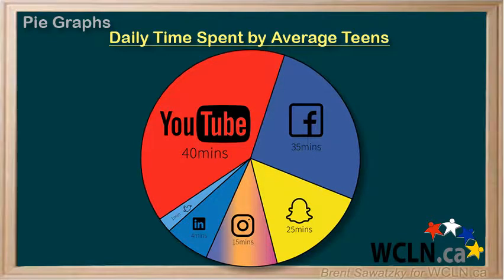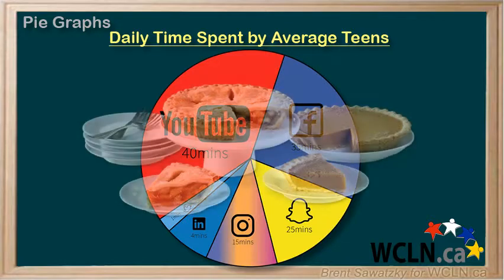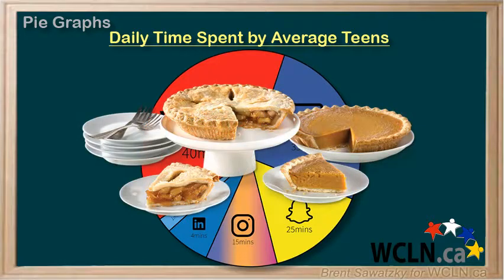Pie graphs, or pie charts, are a really simple and easy way to show how something is broken down. The name is pretty easy to remember, as it looks like a pie, with the slices being of different sizes.